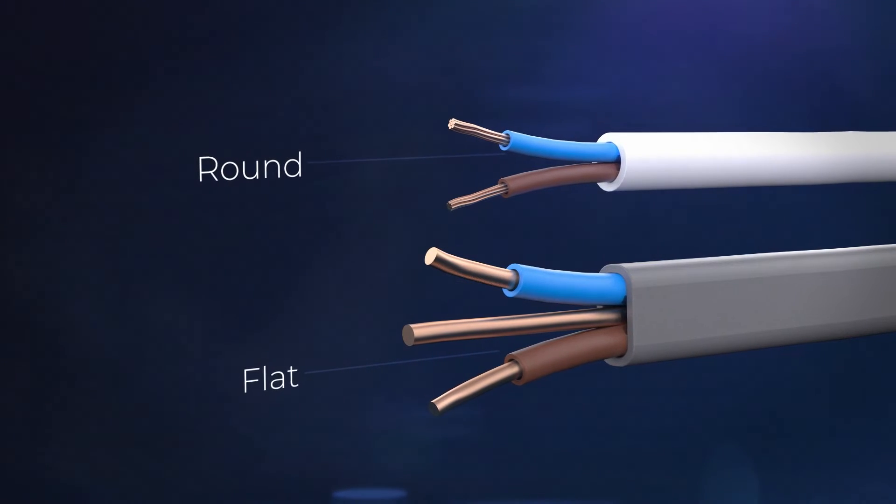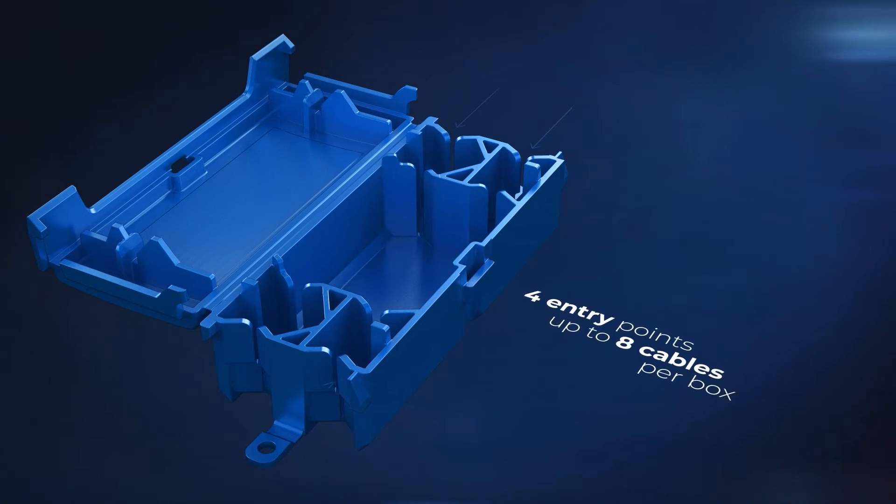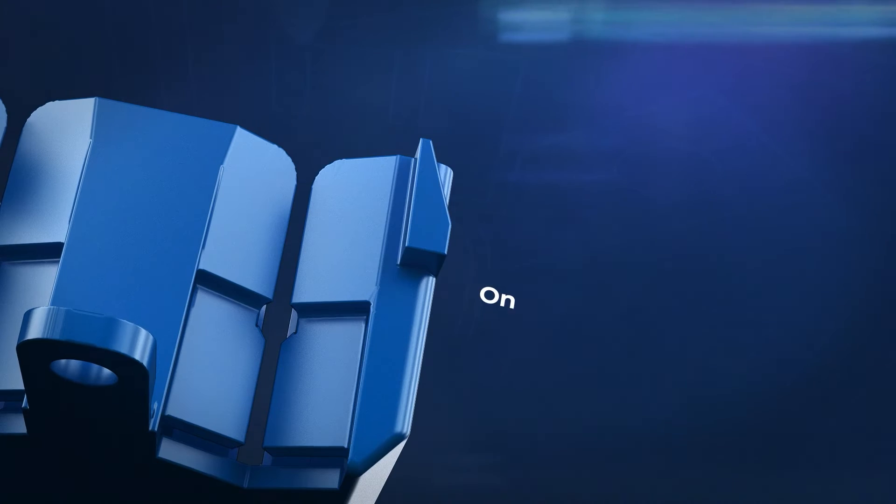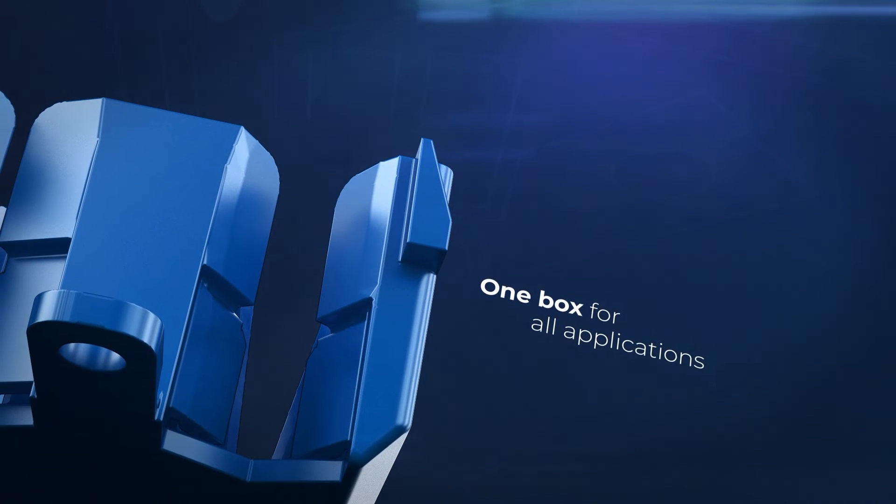The Insure Box is designed for both power and lighting, with 4 entry points and fitting up to 8 cables per box. Its versatility means there is no need to carry multiple box types for different applications.